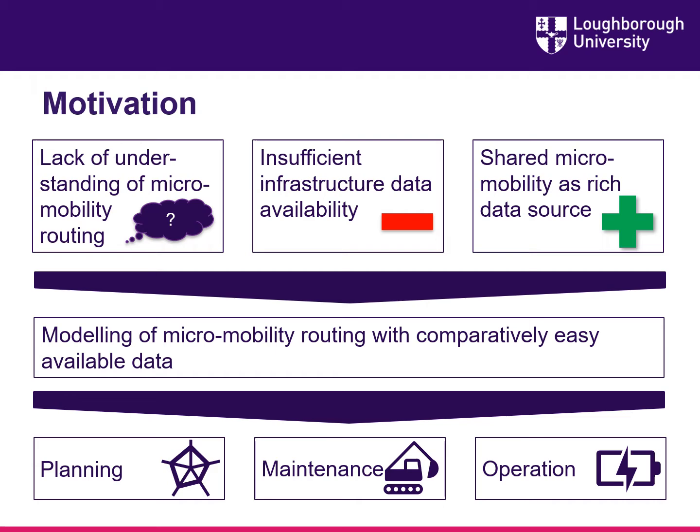For informed decision making it is vital to understand how people use micromobility. One way to create this understanding is through the use of modeling and simulation tools. One part of the modeling and simulation process is route choice. Due to many reasons we have a lack of understanding of how micromobility users choose their routes. One of the reasons is a lack of data. However, with novel shared micromobility solutions we have a unique data source which provides us exactly with the data we need, namely tracking data of micromobility vehicles.